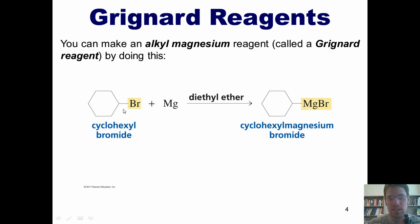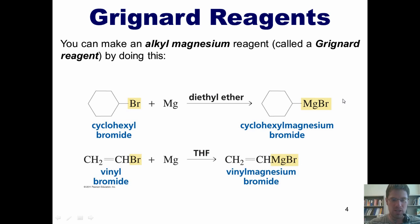You can make an alkyl magnesium reagent, which is also called a Grignard reagent, by doing this. You take any type of alkyl halide, such as an alkyl bromide, shown here, react it with magnesium metal, and what ends up happening is the metal inserts itself between the hydrocarbon chain and the bromine. This type of molecule is called a Grignard reagent. Here's another example. I've got this molecule, which is called vinyl bromide. Once again, it's a bromine attached to a carbon, but this could also work with a chlorine or an iodine. And I react it with magnesium. The magnesium inserts itself between the carbon and the halogen. Once again, these types of reagents are called Grignard reagents. And yes, that is pronounced Grignard, not Grignard.